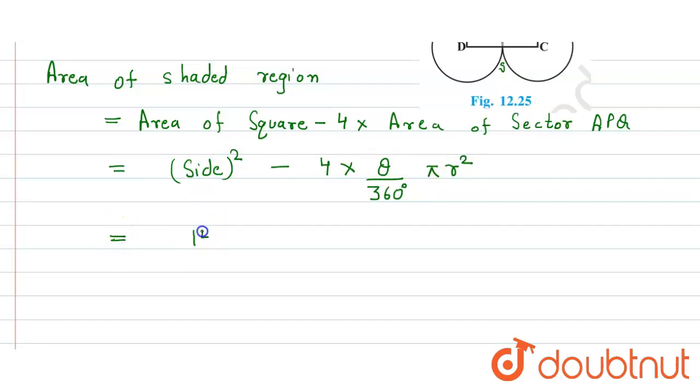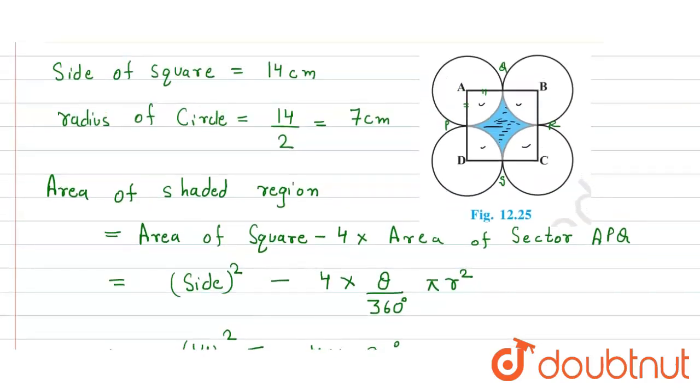So here side is equal to 14 centimeters. So it is 14 square minus 4 into theta is 90 degree divided by 360 degree. This is 90 degree because it is a square and in square each angle is 90 degree.